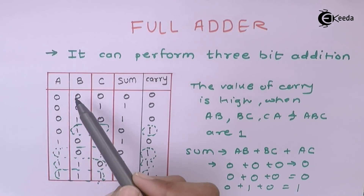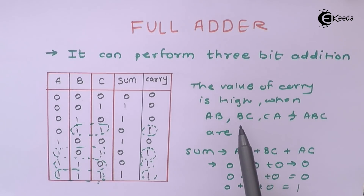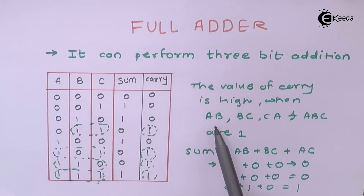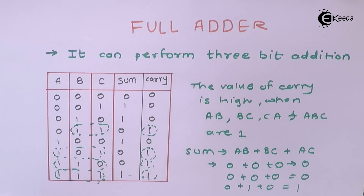The expression AB plus BC plus AC is satisfied for all eight conditions, so we can directly write this condition for the sum. Similarly for carry, AB, BC, CA, and ABC are one when the carry is high. This condition is also satisfying for all equations. So from the sum equation we can construct the circuit for sum, and from the carry condition we can construct the circuit for carry.